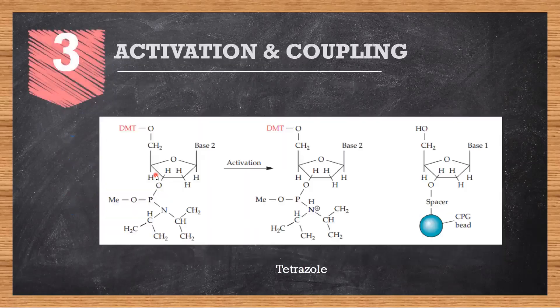The third step is activation and coupling. Once you removed your OH DMT group and made the nucleotide free, you get this structure. Now to add something on this, we need to introduce our second nucleotide, and this is the phosphoramidite molecule. We have the DMT, we have two protecting groups right here.